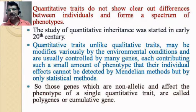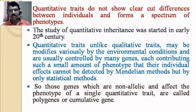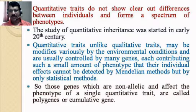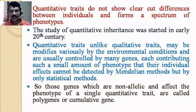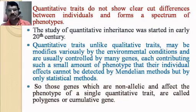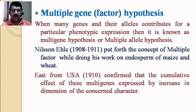Those genes which are non-allelic and affect the phenotype of a single quantitative trait are called polygenes or cumulative genes. Different types of genes and different alleles come together to form a particular phenotypic trait — this is known as the cumulative effect. The genes are known as polygenes or cumulative genes because they all come together to express a particular type of phenotype.